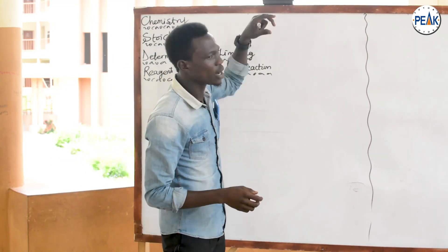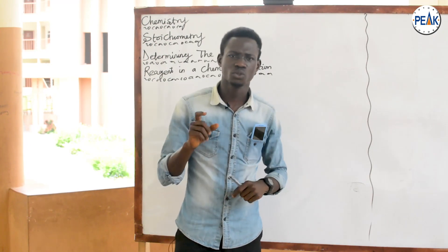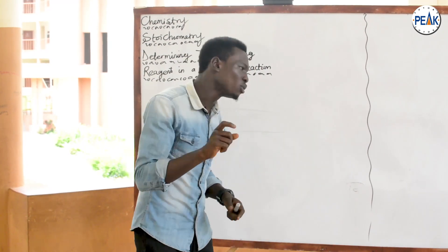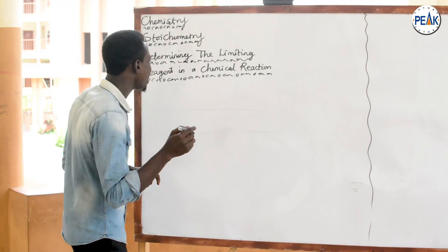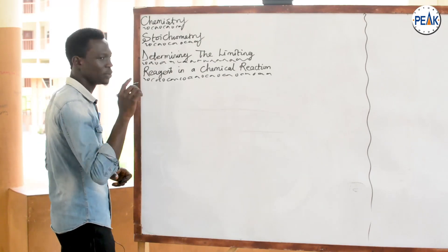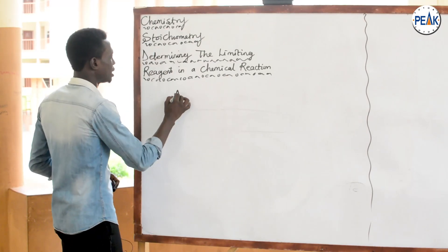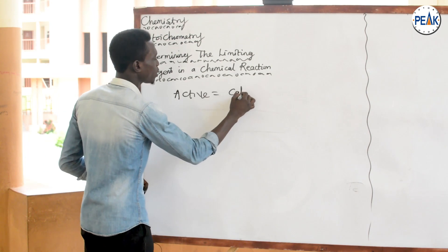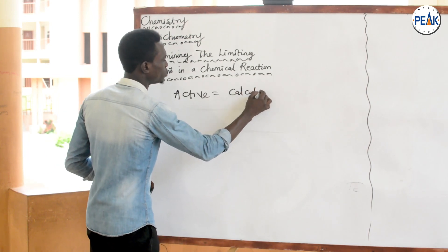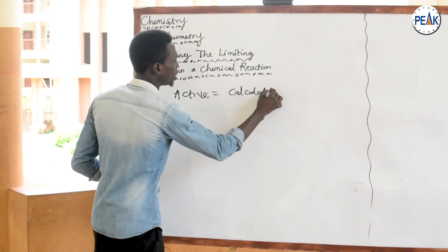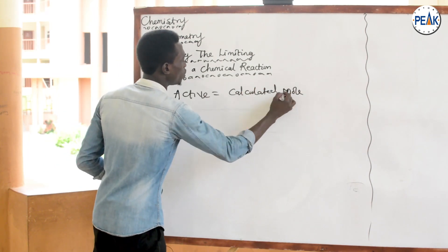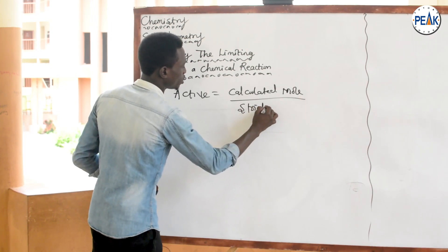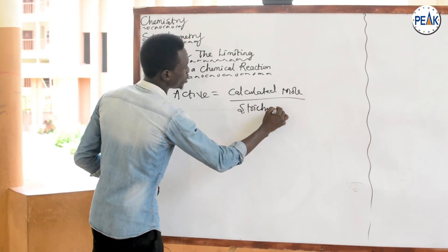In calculating the limiting reagent for any particular reaction, there is something we need to know: the active mole. The active mole for any particular reagent in a chemical reaction is given by the calculated mole divided by the stoichiometric mole.